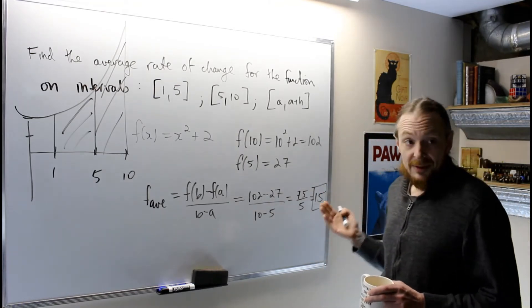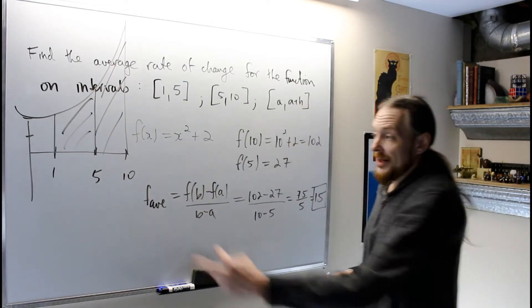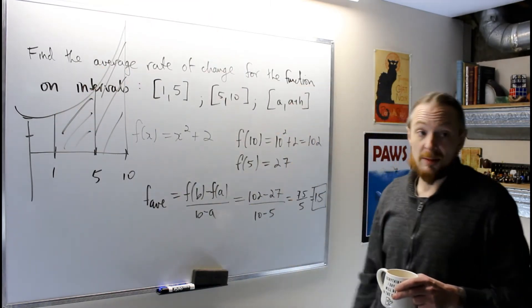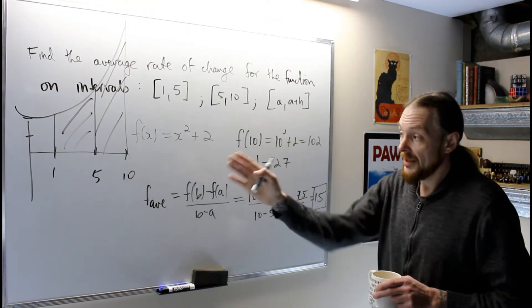Notice that the average rate of change on this interval was larger than on the first interval, which makes sense. The function is increasing drastically and the values are getting bigger, so the average rate of change should increase as we go along in intervals.